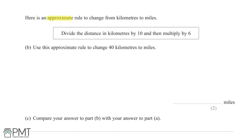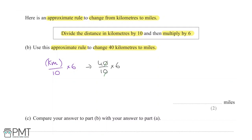An approximate rule to convert kilometres to miles is: divide by 10 then multiply by 6. For 40 kilometres, we calculate 40 ÷ 10 × 6. Cancelling the zeros gives 4 × 6 = 24 miles. This question is worth two marks: one for showing the step and one for the correct final answer of 24 miles.